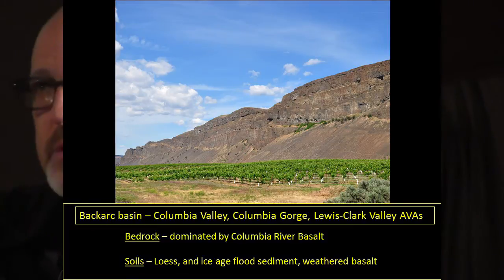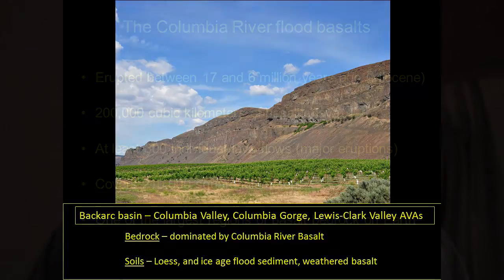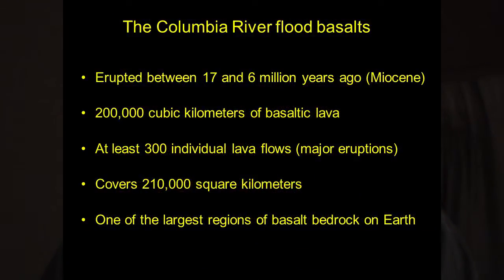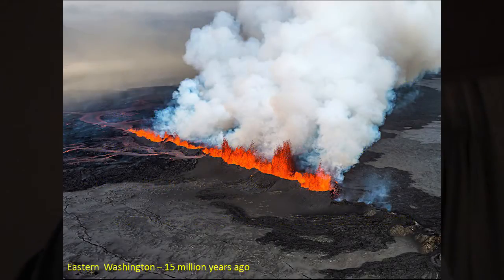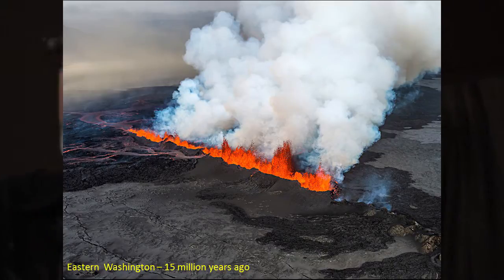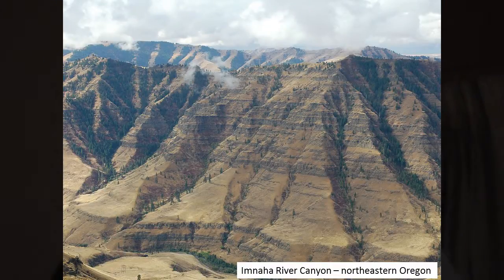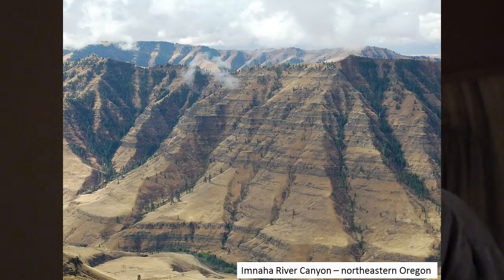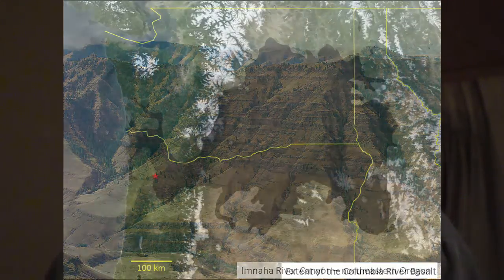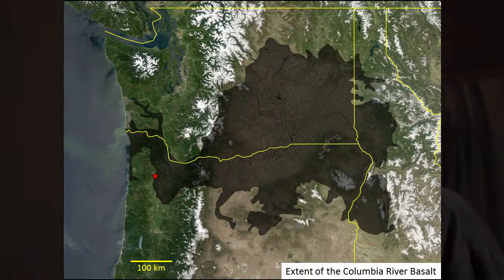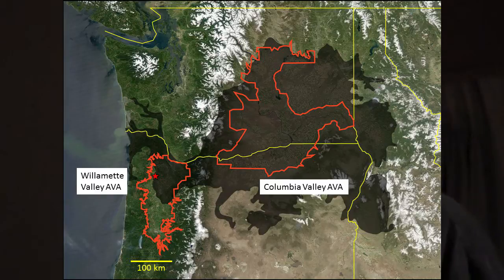These are some of the largest basalt eruptions on earth — a staggering amount of lava. Eastern Washington 15 million years ago looked like Iceland does today with active lava flows. That's about 600 meters of basalt in the image, and the basalt in the middle of the Columbia Basin is on the order of 10 times that thick. It flowed all the way down the Columbia River, up the Willamette Valley, out to the Pacific Ocean, and down the Oregon coast — an incredibly extensive set of lava flows.